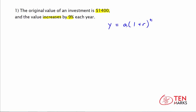In this equation, a represents the initial amount, which we know is $1,400. y is going to be the output or ending value, and that depends on the number of years the investment goes on for, so we leave y as is. Now we have 1 plus r.